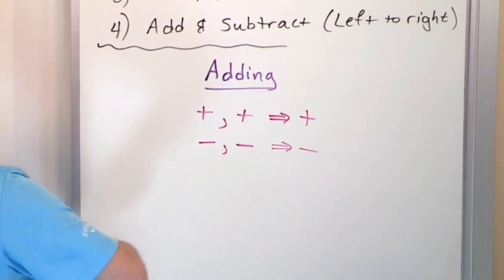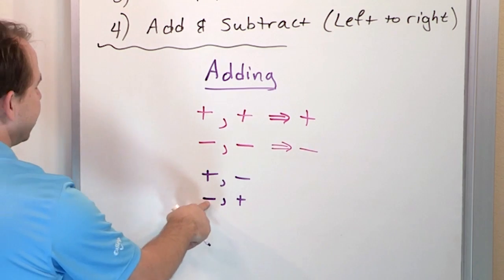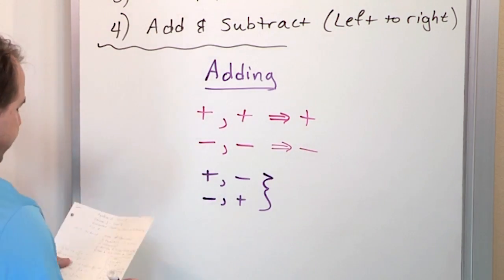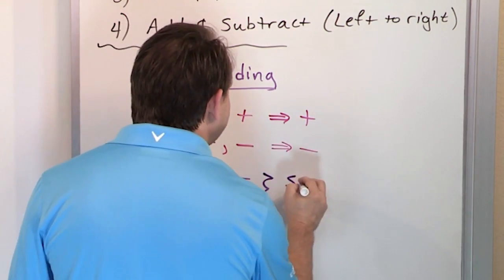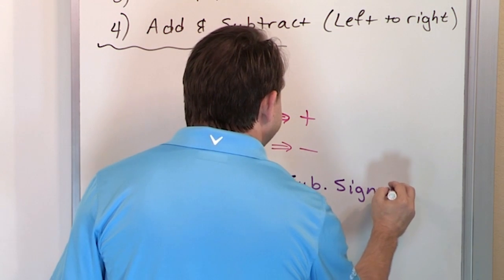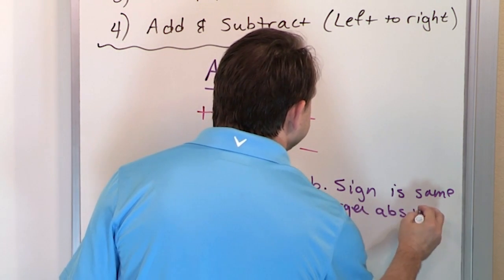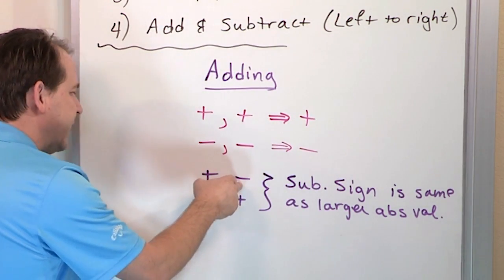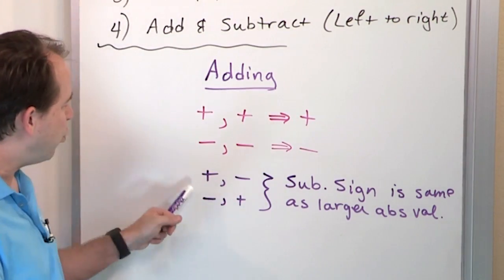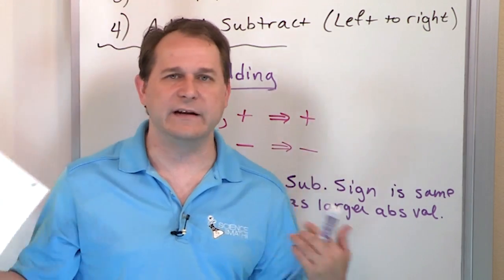The problem comes when you try to add a positive to a negative number, like three plus negative five, or if you have a negative and you're adding a positive, like negative seven plus four — it's difficult to remember what the sign will be. The sign can be either positive or negative. When you have mixed signs like this, all you do is subtract the numbers ignoring the signs first, and then the sign of the answer is the same as the larger absolute value.